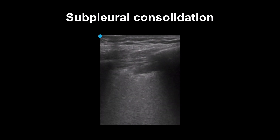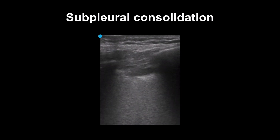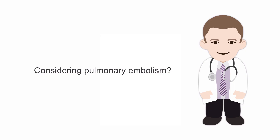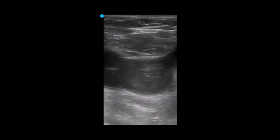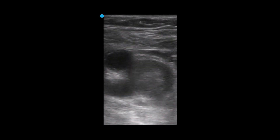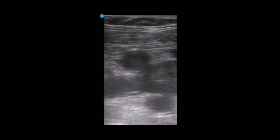One way to approach looking for these is to scan areas where patients have pleuritic pain. The other role for ultrasound in the evaluation of possible pulmonary embolism is that if your lung ultrasound is non-diagnostic, check for a deep vein thrombosis. You can also perform an echo. By using this approach to the dyspnea patient, you can reduce the need for computed tomography.